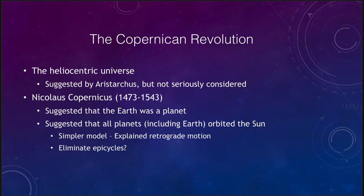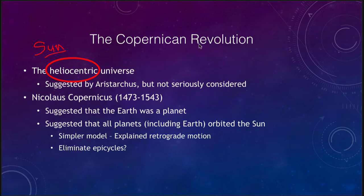Let's start off looking at what we call the Copernican revolution. What Copernicus gave us was the idea of a heliocentric universe — that everything was centered on the sun. The prefix here refers to sun. Now this had been suggested by one of the Greek astronomers named Aristarchus, but it was really not seriously considered because parallax could not be measured.